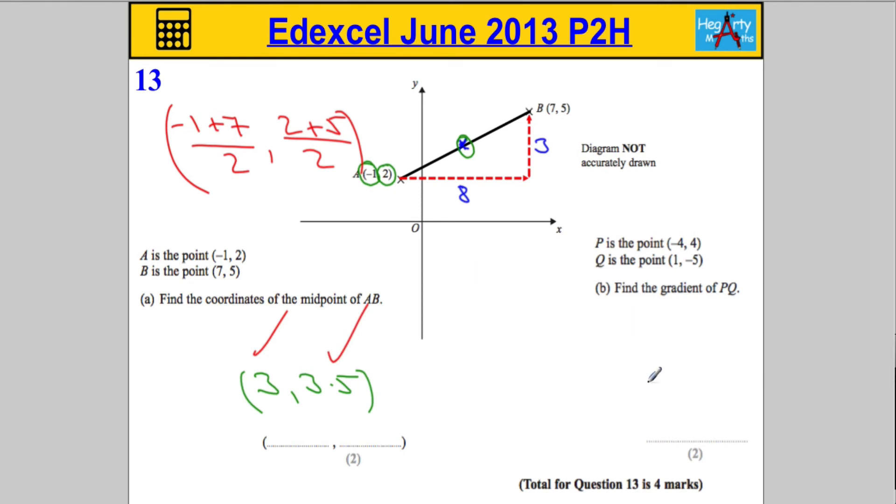Now part B, we're told that P is the point negative 4, 4. Q is the point 1, negative 5. And we're asked to find the gradient of this line segment PQ. And the way to get the gradient, the gradient is often referred to in maths or by mathematicians by the letter M.